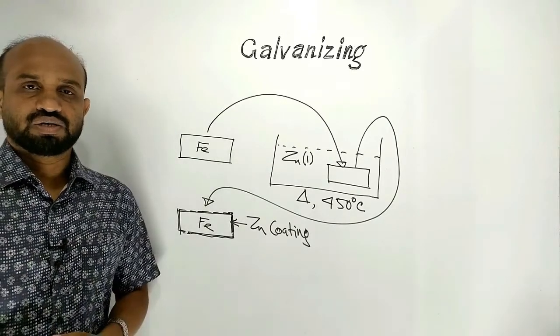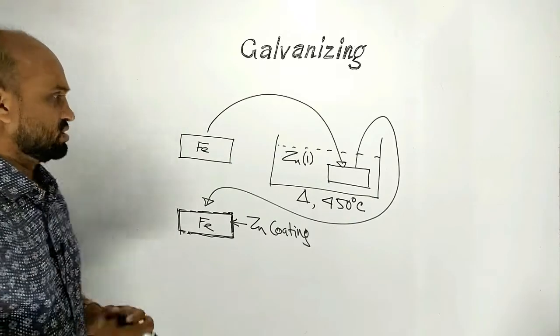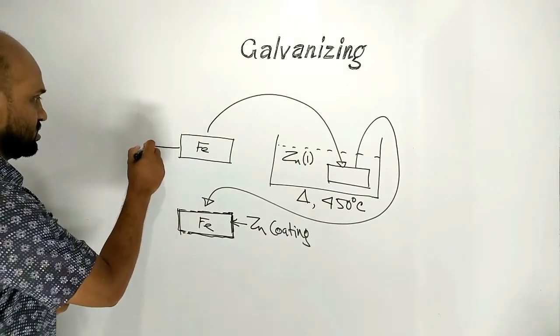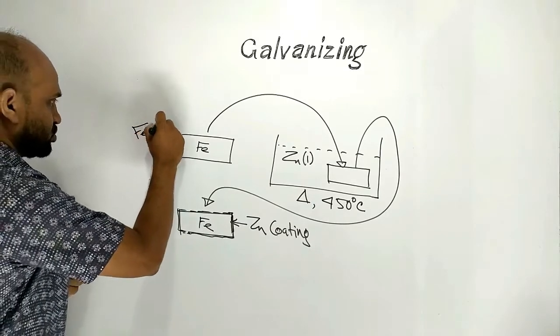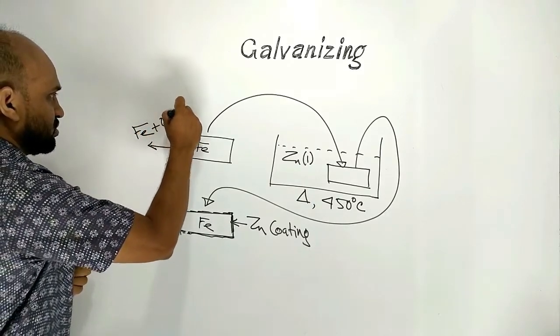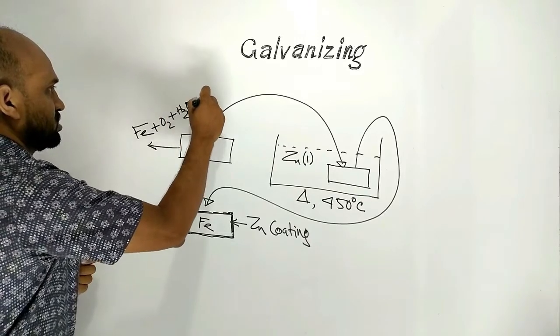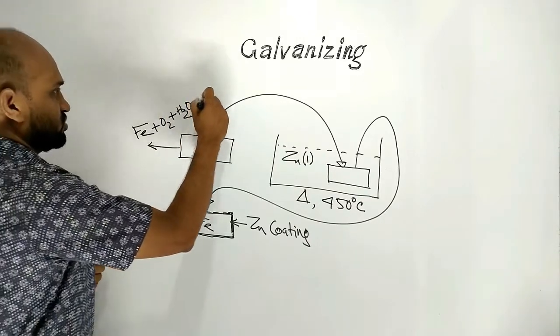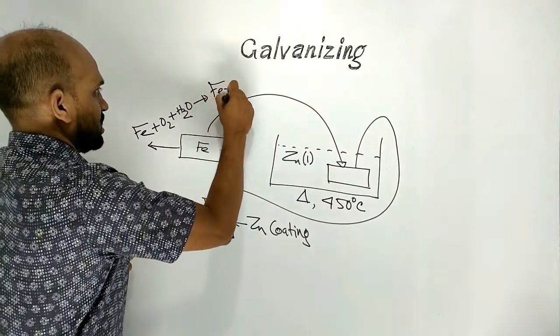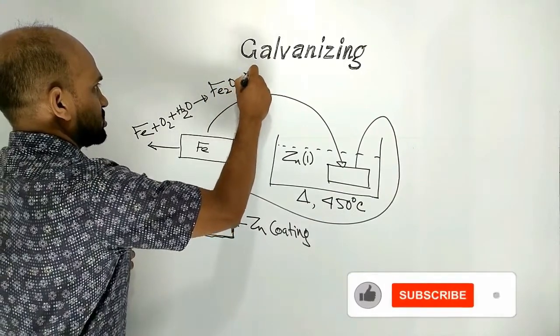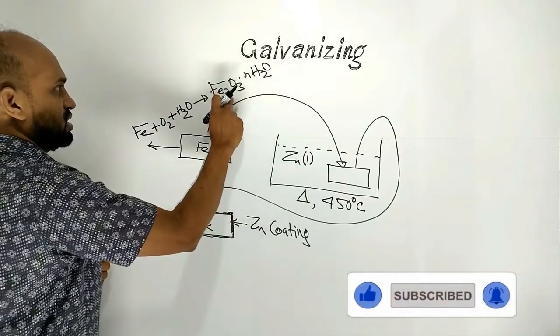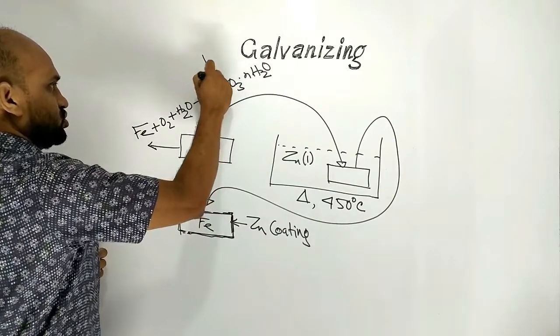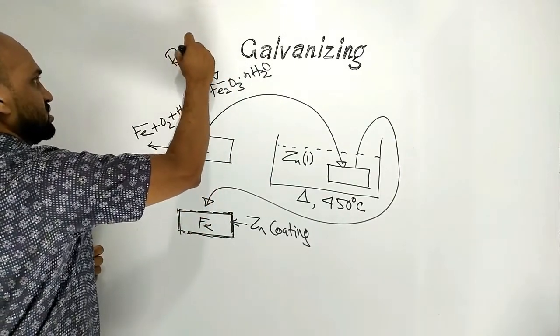What is the advantage of galvanizing? Here iron reacts with oxygen in presence of water and forms hydrated iron oxide, which is known as rust.